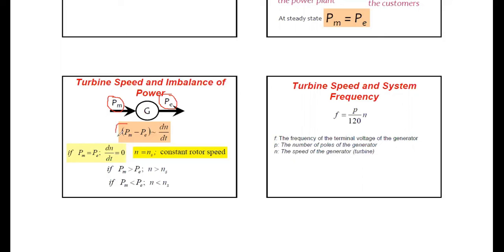If there is a change in power, there is a corresponding change in speed. At steady state or normal condition, rotor speed n equals synchronous speed ns. At that point, electrical power equals mechanical power input — power input equals power output — and therefore the rate of change of speed at steady state condition equals zero.